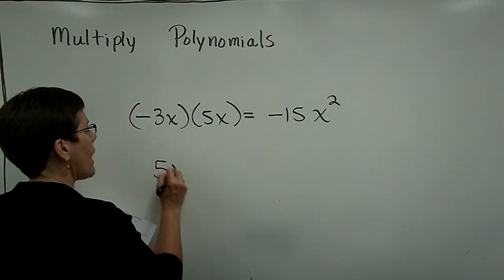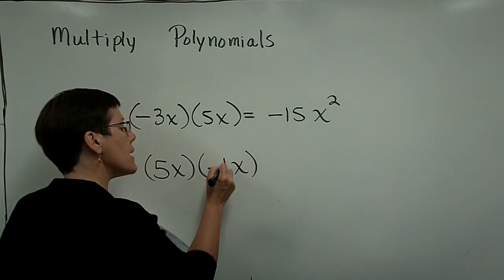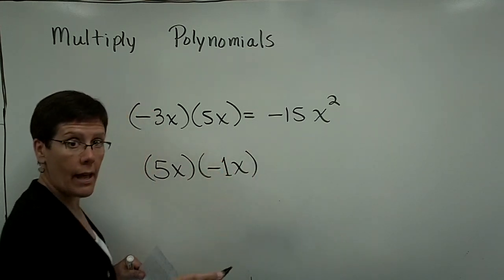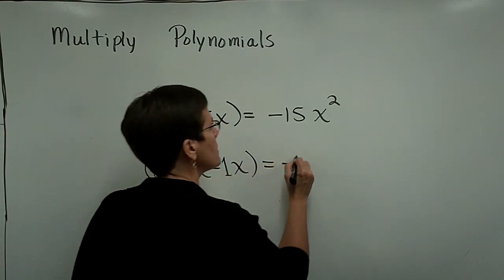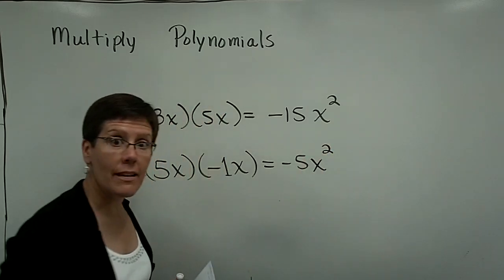Let's take a look at this one: 5x times a negative x. Please recognize that as a negative 1x. And 5 times a negative 1 is a negative 5, and that x times x is x to the second power.